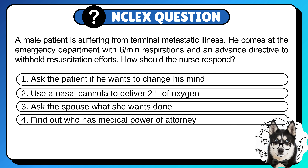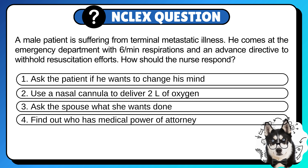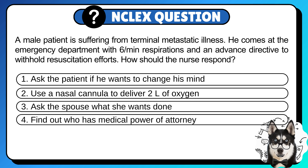1. Ask the patient if he wants to change his mind. 2. Use the nasal cannula to deliver 2 liters of oxygen. 3. Ask the spouse what she wants done. Or 4. Find out who has medical power of attorney. Pause the video, comment your answer, and press play to see the correct choice.